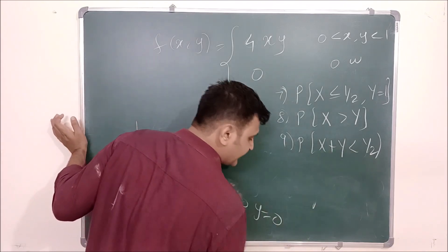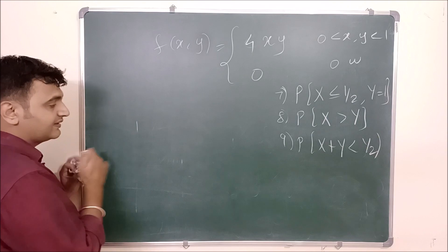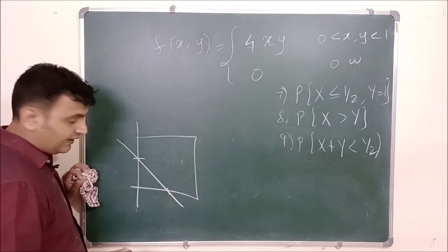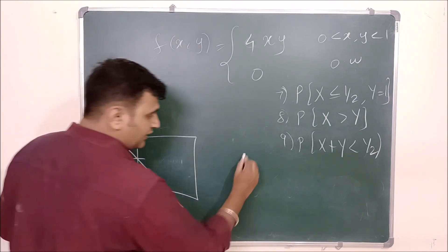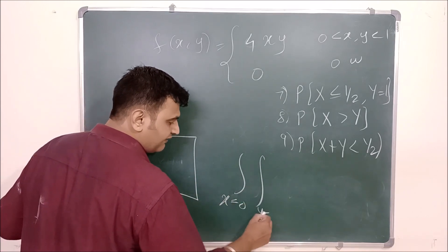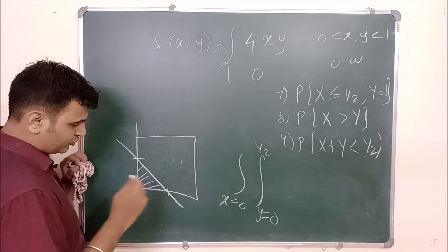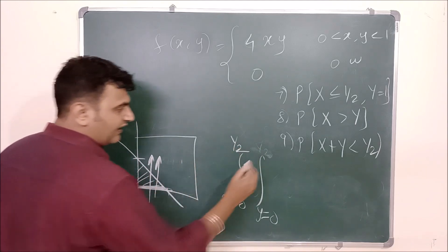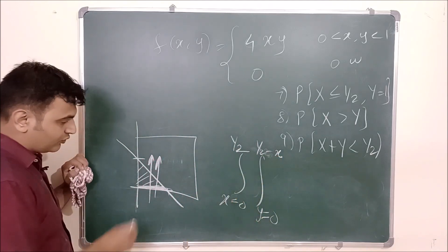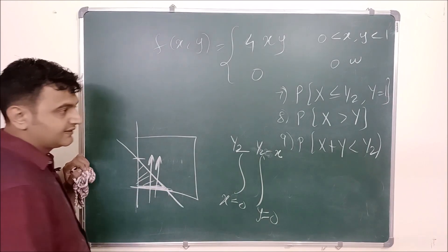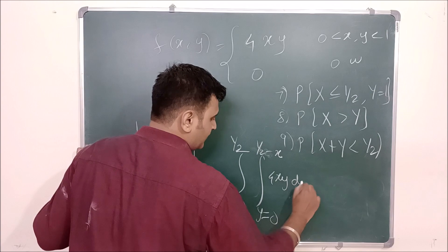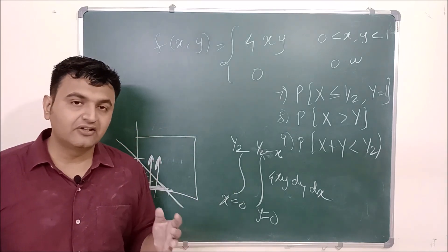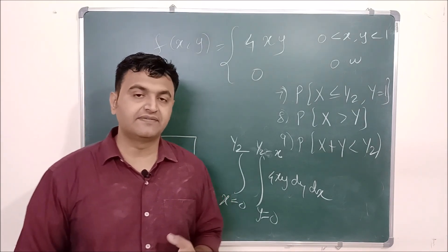The ninth question: probability that X + Y < 1/2. Draw the line x + y = 1/2 — if this is 1/2 on each axis, the region below that line is a triangle. X goes from 0 to 1/2, and y goes from 0 to (1/2 − x), since from x + y = 1/2 we get y = 1/2 − x. The integral is the double integral of 4xy dy dx with those limits. These cover all the kinds of questions one can expect on joint PDF, joint CDF, and marginal distribution.